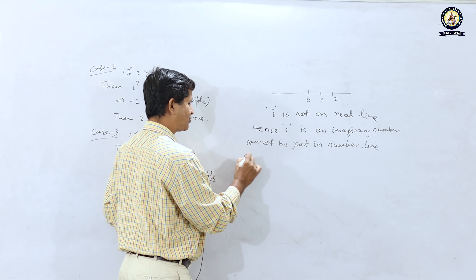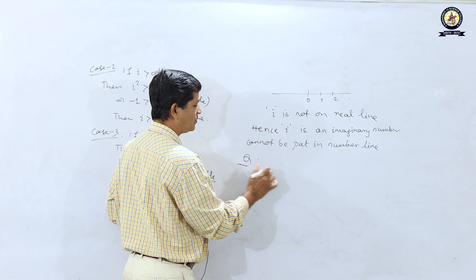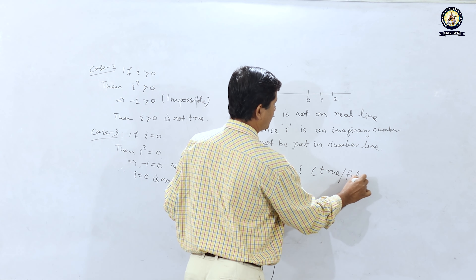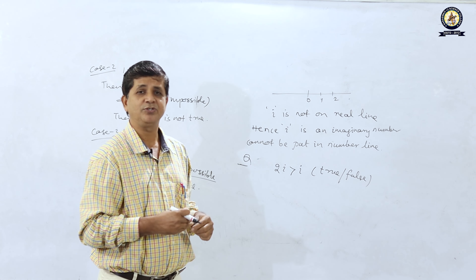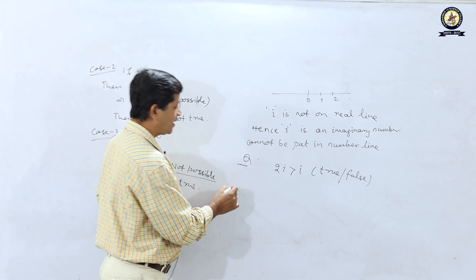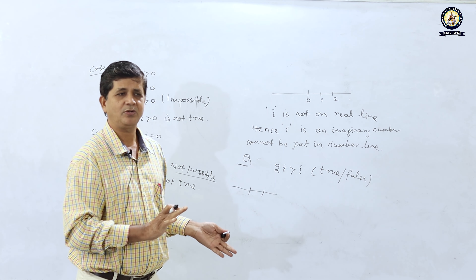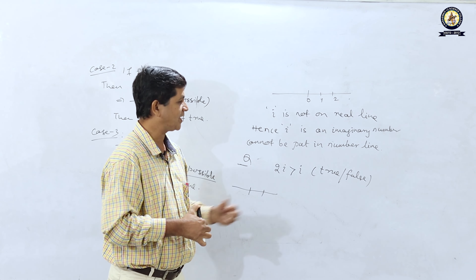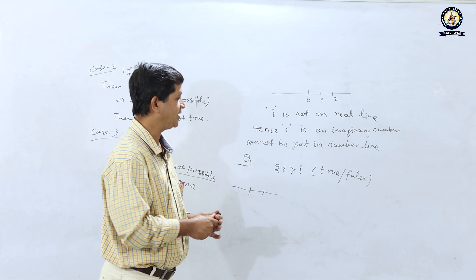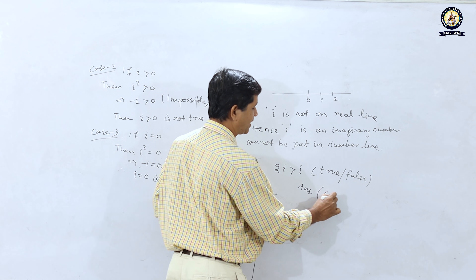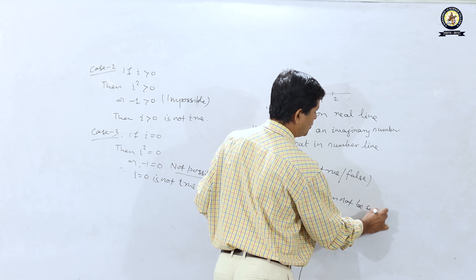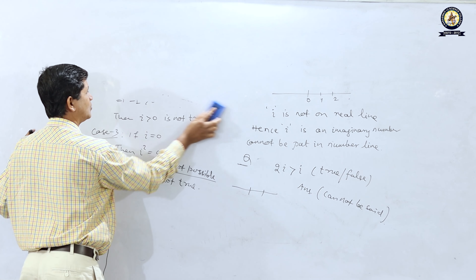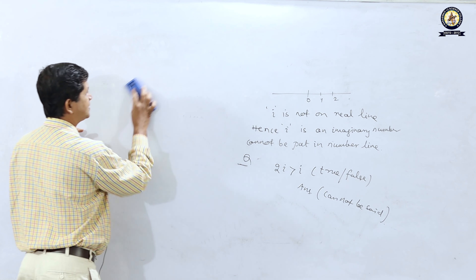Here is a question: is 2i > i true or false? Since i cannot be placed on the number line, we cannot say which is larger. 2i > i cannot be confirmed, and 2i < i also cannot be confirmed. So the answer is: cannot be said. This statement is neither true nor false.